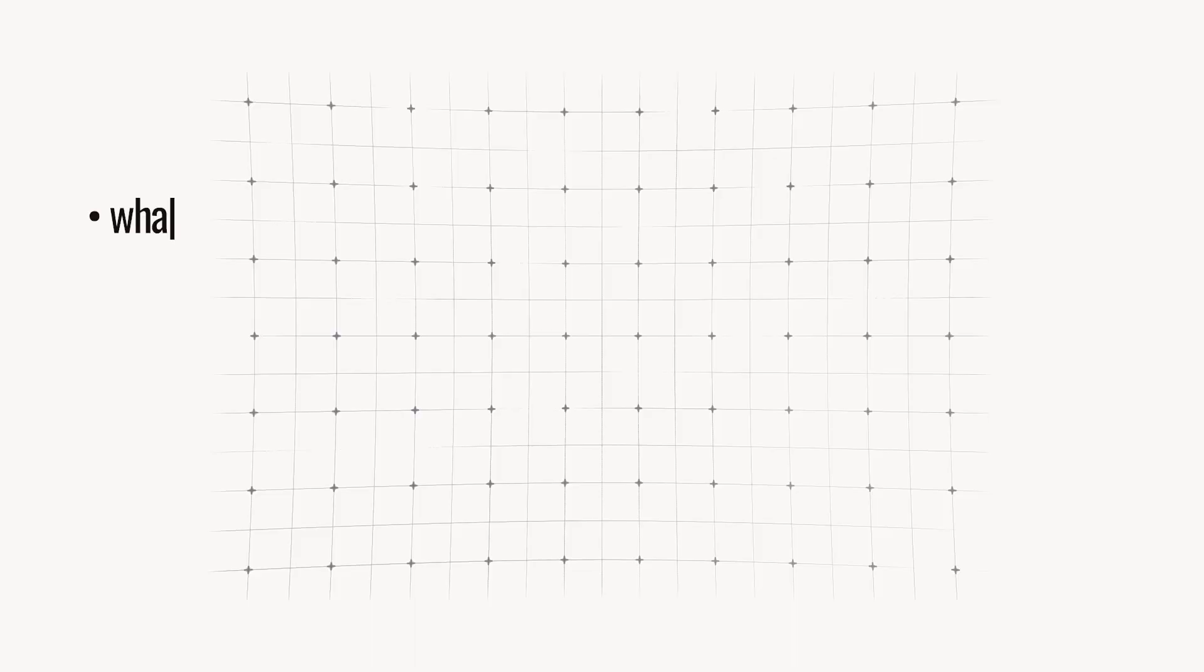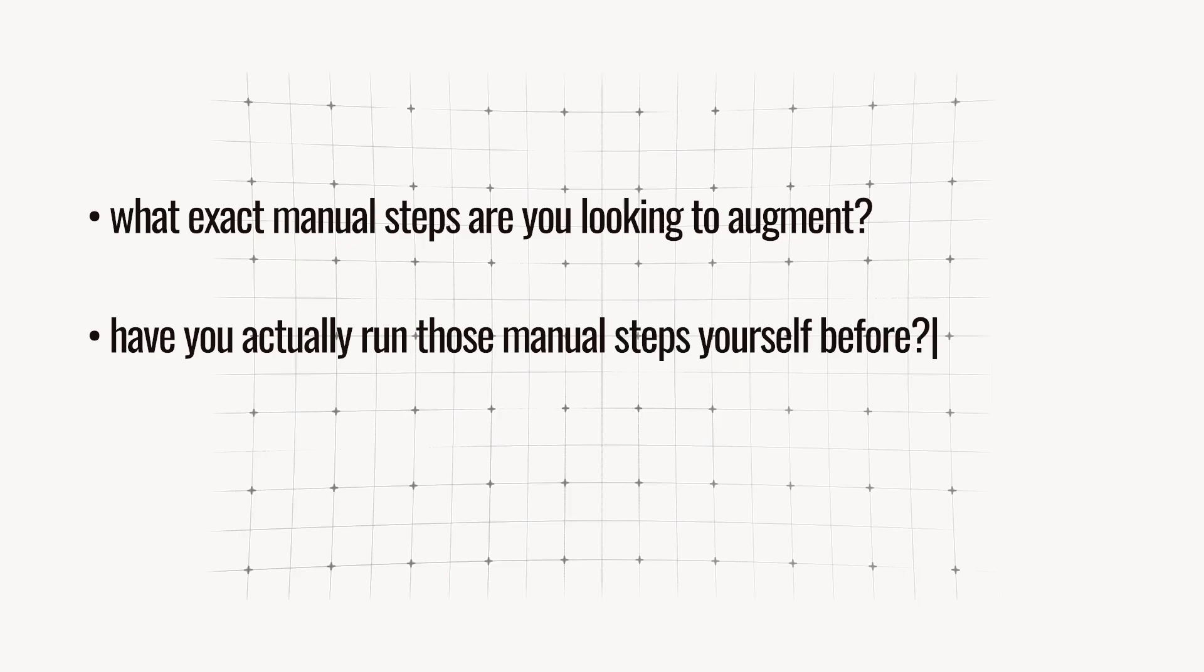Firstly, we need to work out the specific problem we're solving so that we can work backwards to our inputs. At this point you might be like, obviously Simon, we're going to start with a specific problem in mind. But what we're talking about here is specific. What exact manual steps are you looking to augment? When you do this, you'd be surprised by how many people realize they're actually trying to solve two to three problems instead of just starting out with one clear scope.